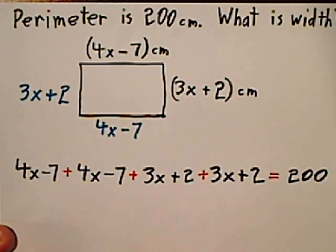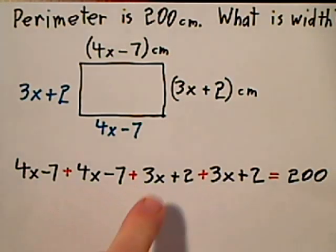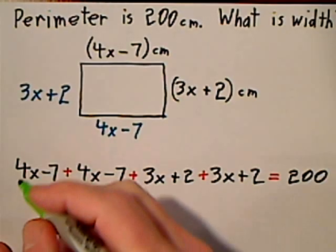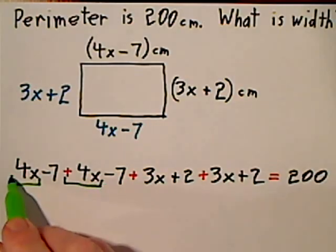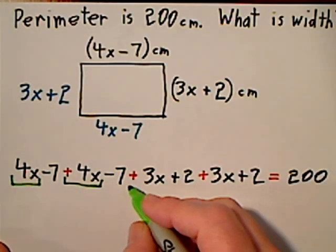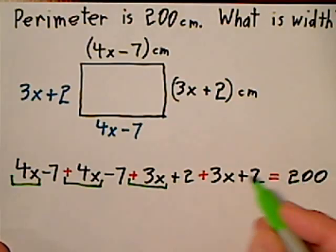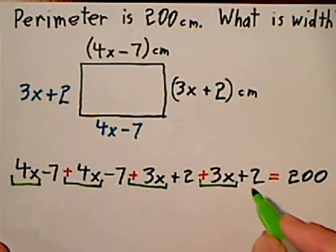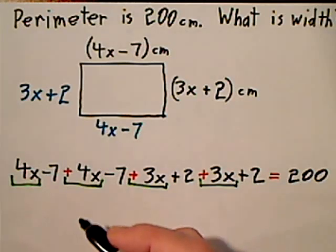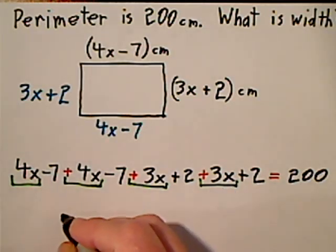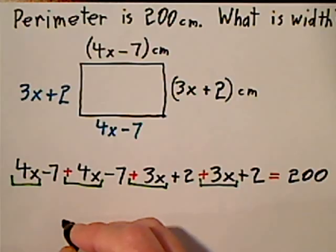Now I have an algebraic equation. You combine like terms or usually I'll say clean it up. You have a 4x, that's a positive 4x, positive 4x, positive 3x, and positive 3x, so those are four like terms.